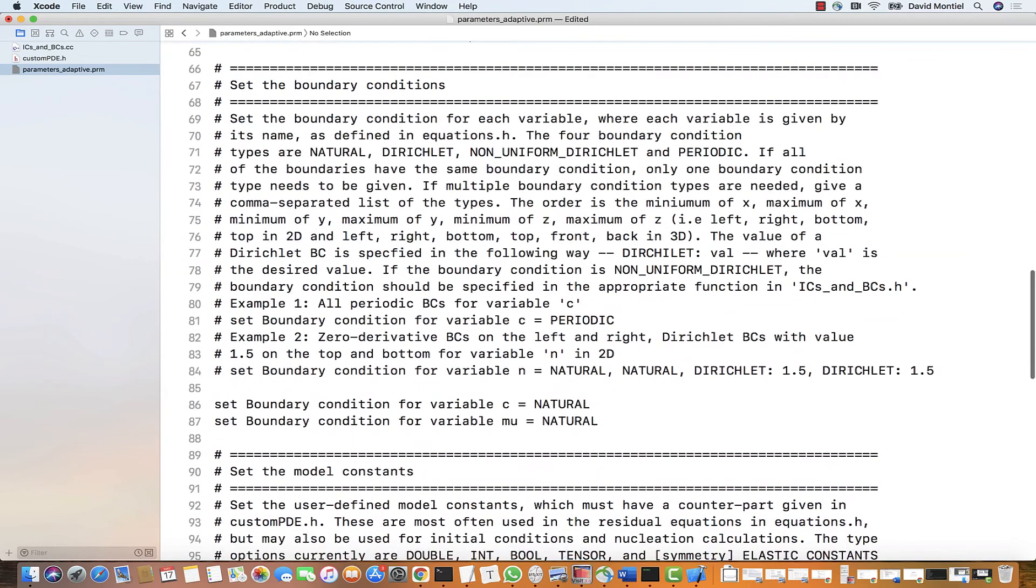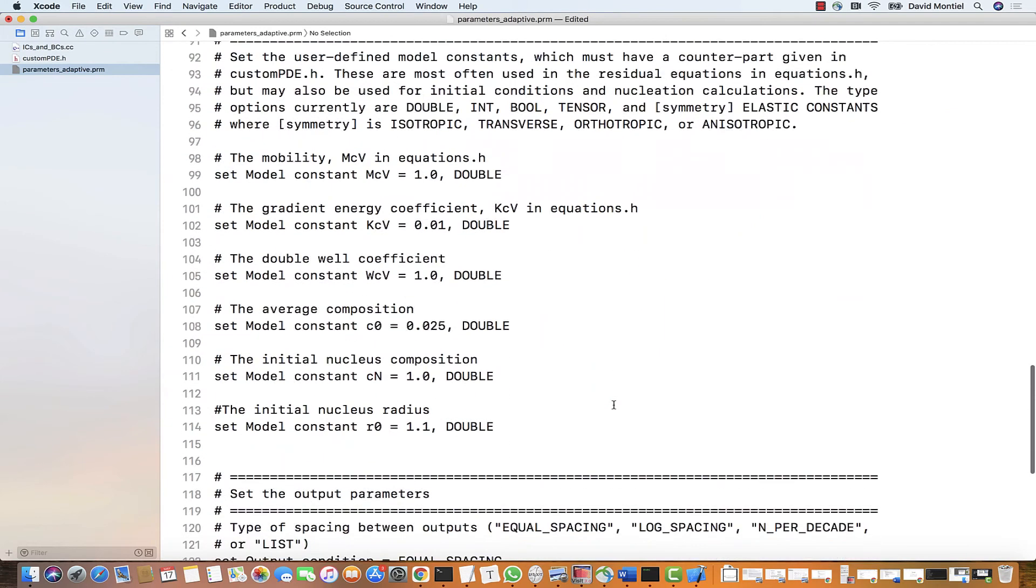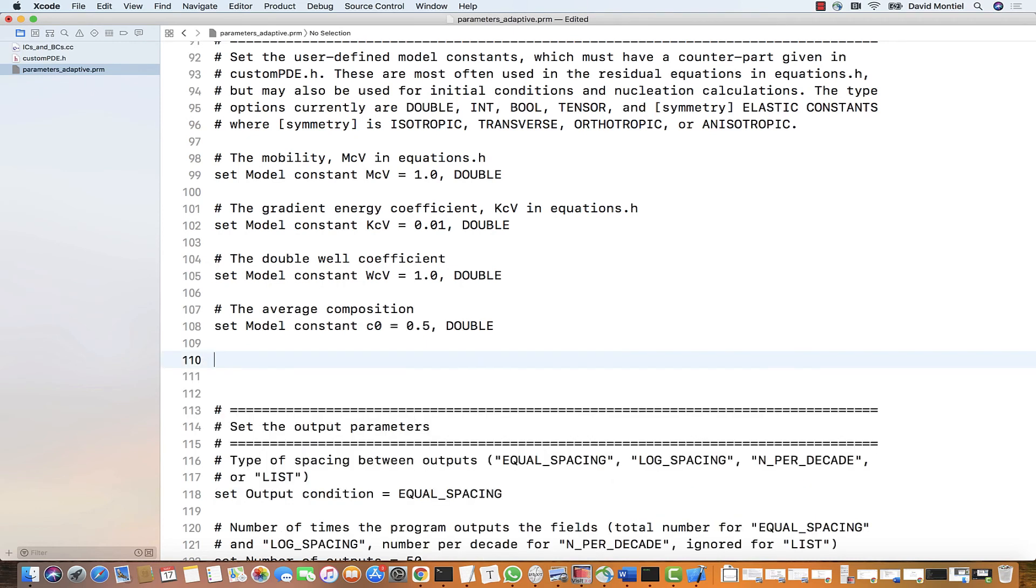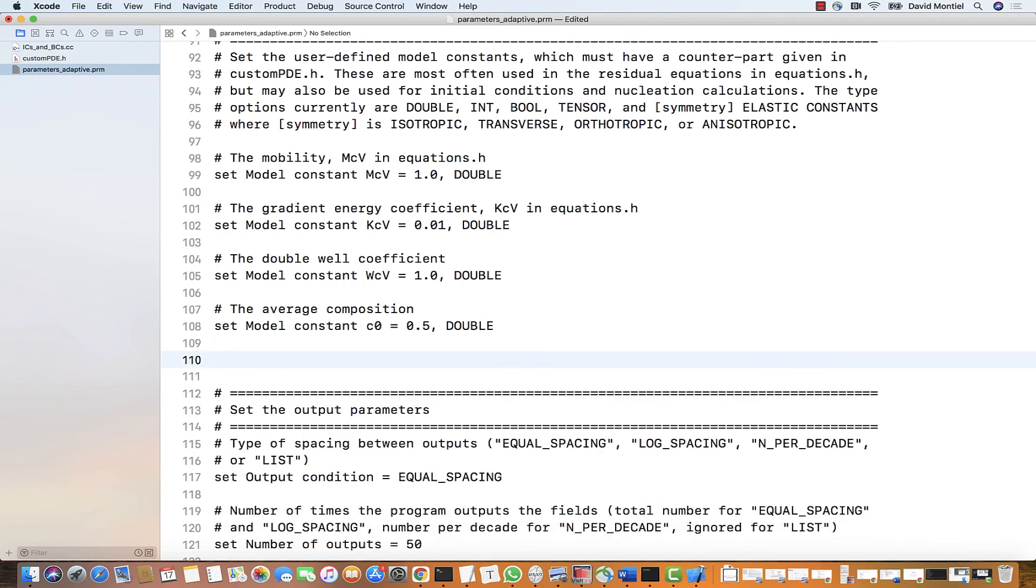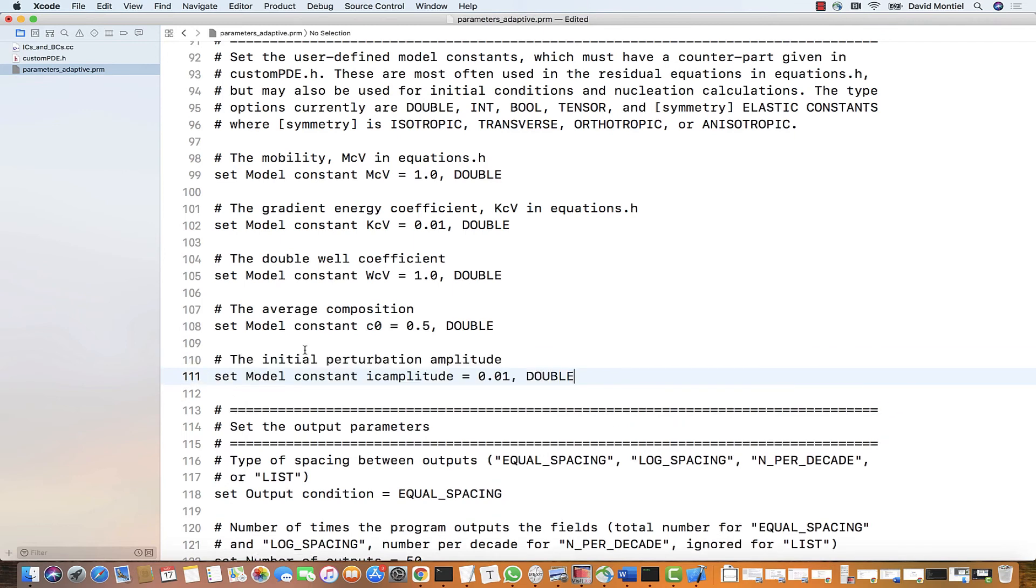Now let's go and change the number of time steps. 50,000 will give us a decent representation of the evolution dynamics. Next, we change the boundary conditions from natural to periodic for both fields. We go to the constant section and change the average composition from 0.025 to 0.5. Since we're not going to insert any nucleus, we remove the initial nucleus composition and the nucleus radius.